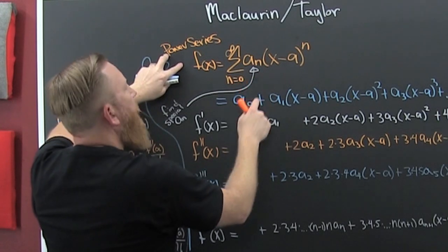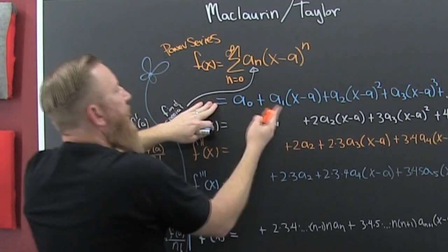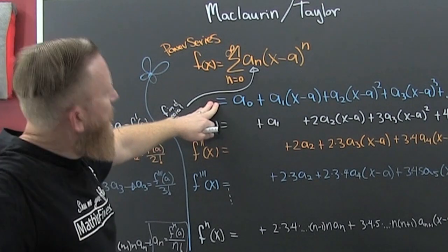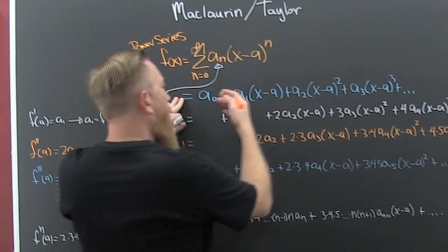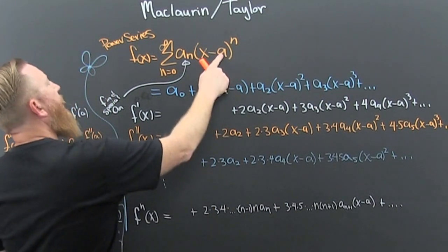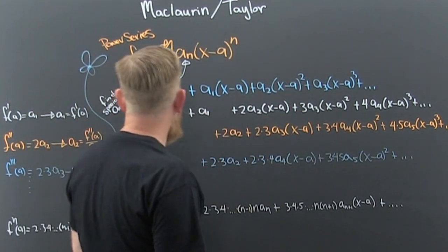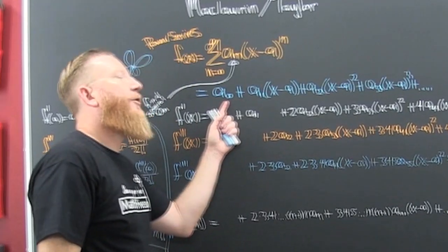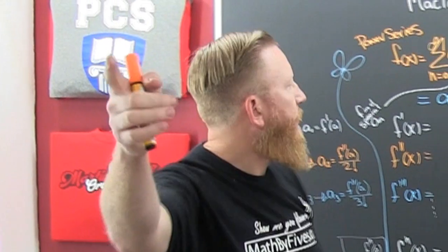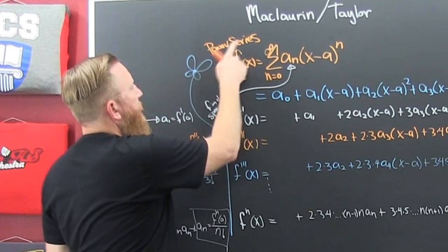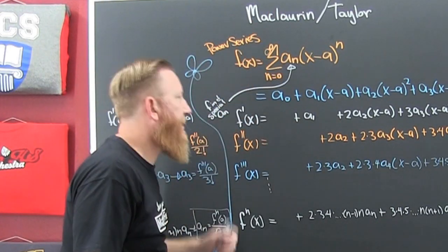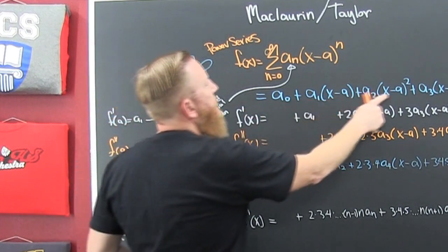If you trot out terms of the power series, that is just some generic polynomial. Trot it out — it's centered at A. You find the radius of convergence the way you do, but we're looking for a special power series. We're looking for special coefficients.